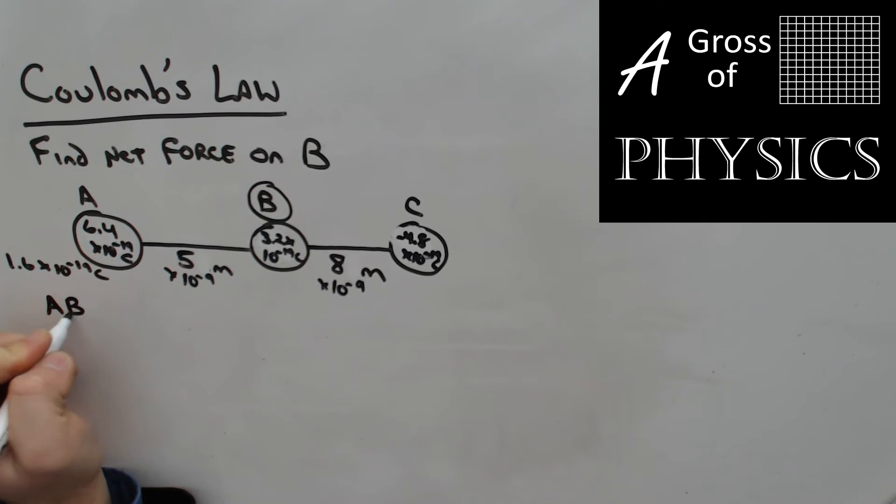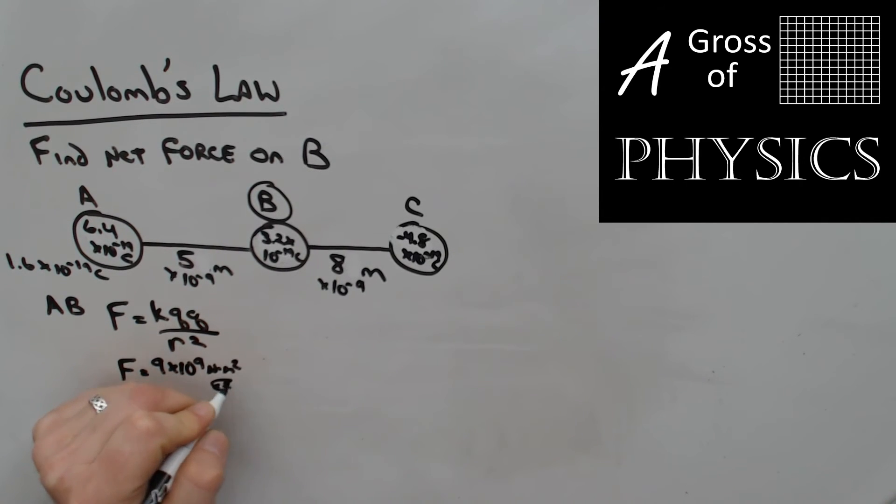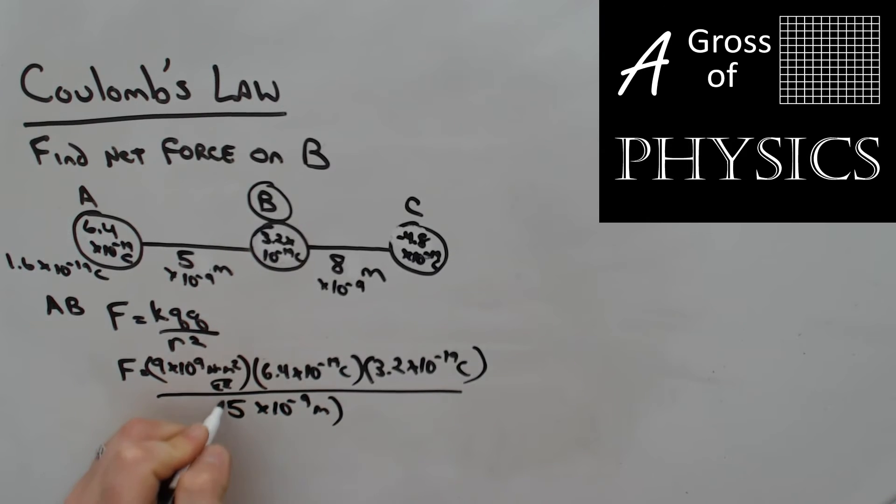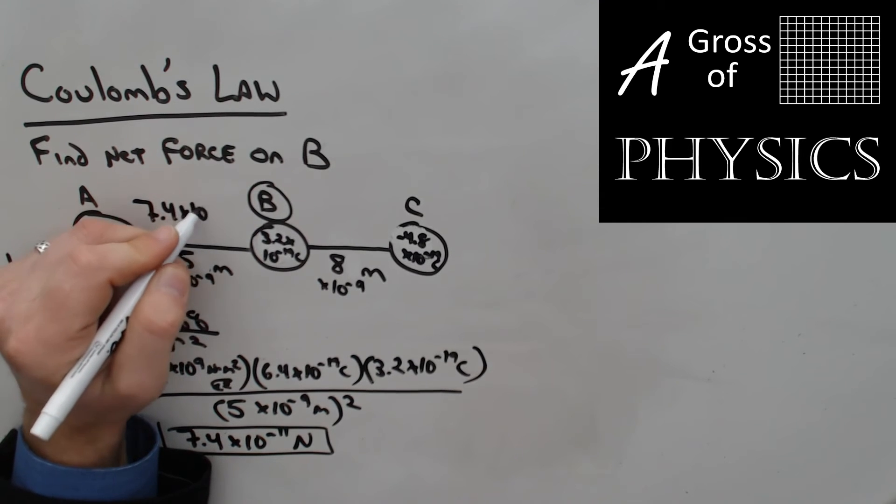Now we're going to look at each separately. Let's look at AB first and find the electrostatic force between them: K QQ over R squared. 9 times 10 to the 9 times 6.4 to the negative 19 times 3.2 to the negative 19, all over 5 times 10 to the negative 9 meters squared. 9E9 times 6.4E-19 times 3.2E-19, divided by 5E-9 squared. I'm getting 7.4 times 10 to the negative 11 newtons.